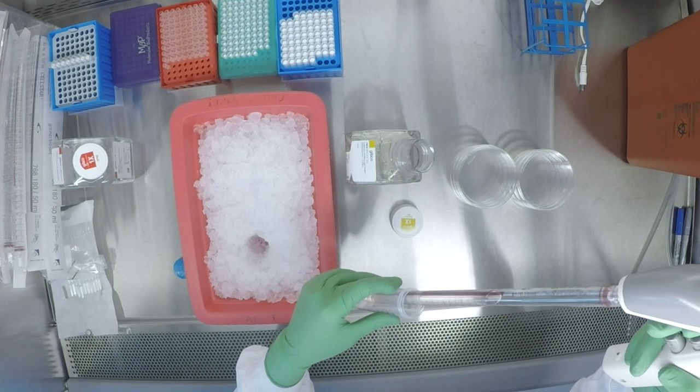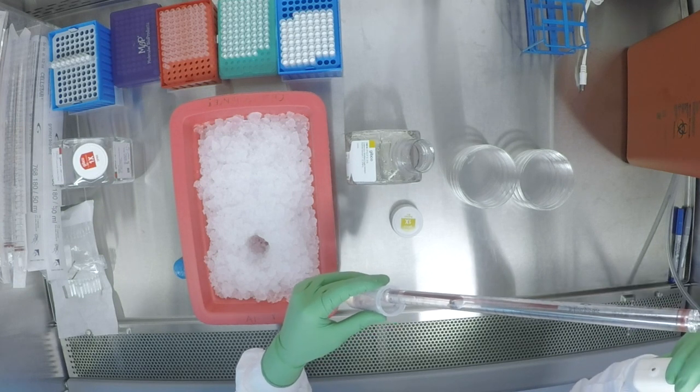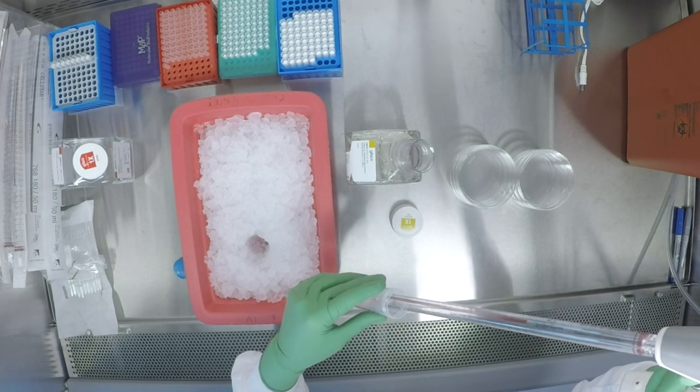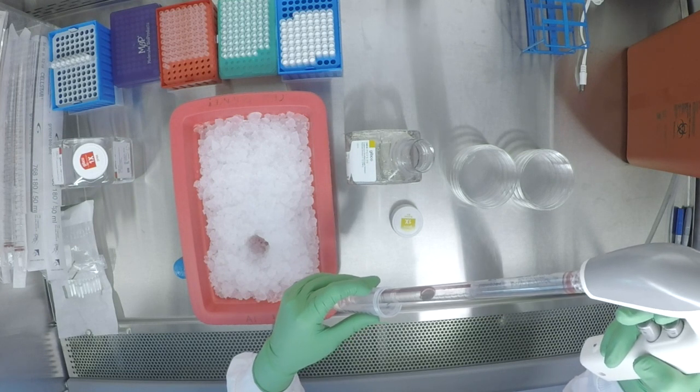You want to mix the entire volume of the DMEM F12 and Matrigel vigorously about three to five times using a 25 ml pipette.